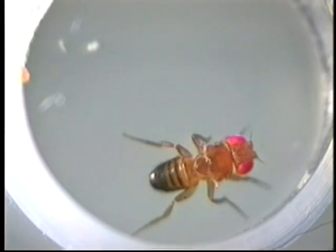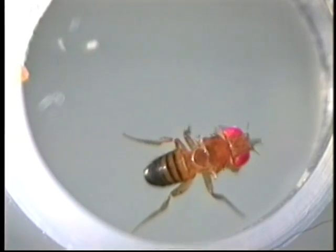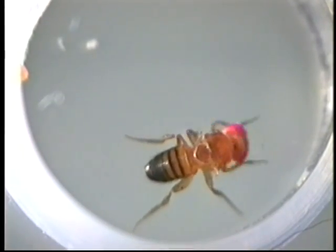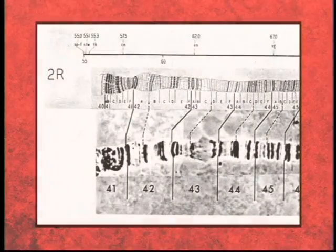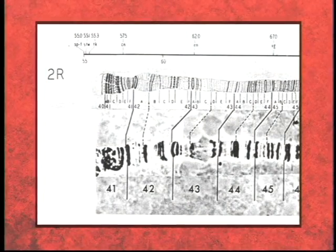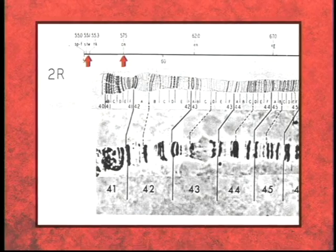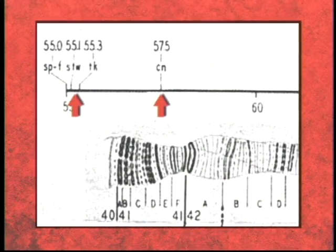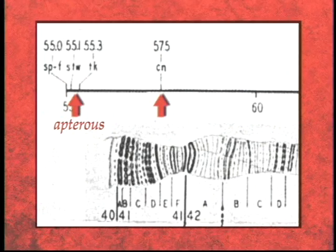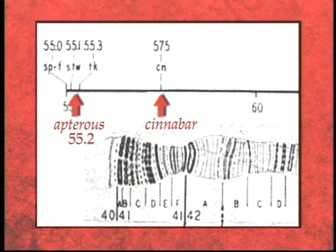This fly is homozygous for two mutations, Apterous and Cinnabar. Since these two mutations are located close to one another, this double mutant is useful to researchers wanting to map another gene suspected of being close by.